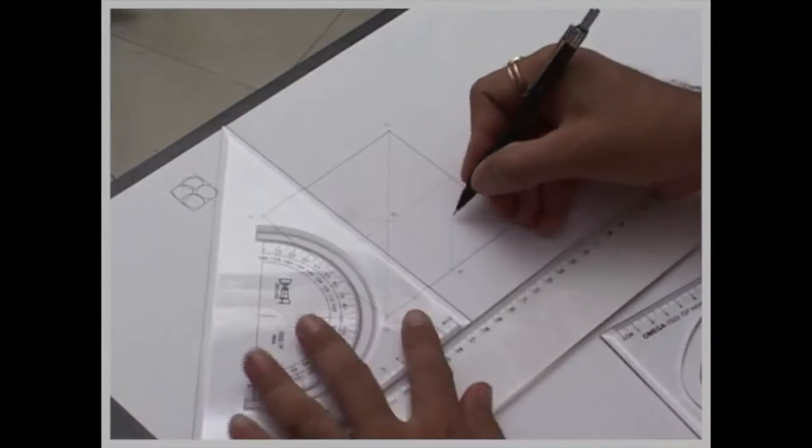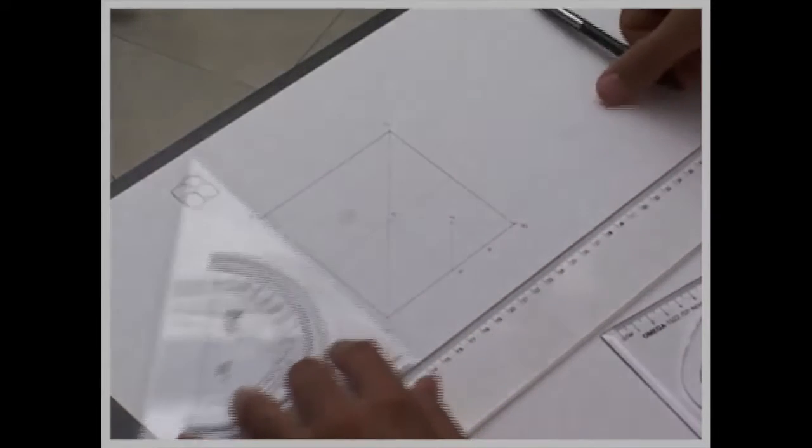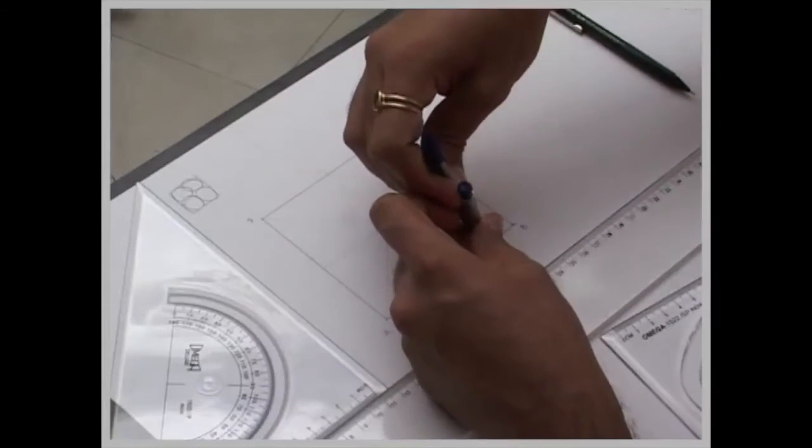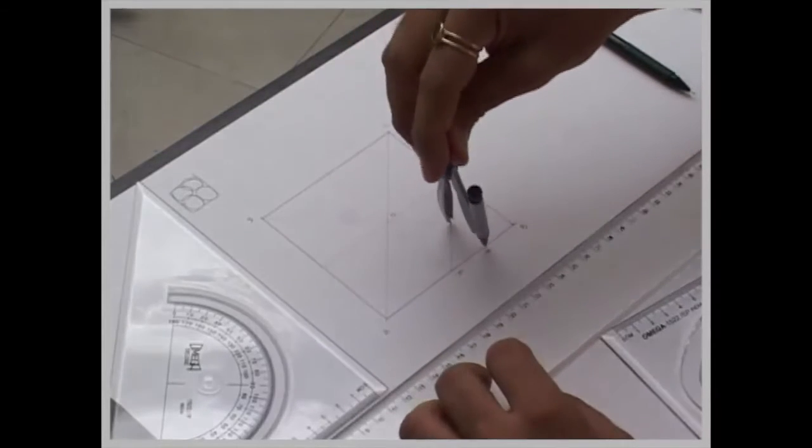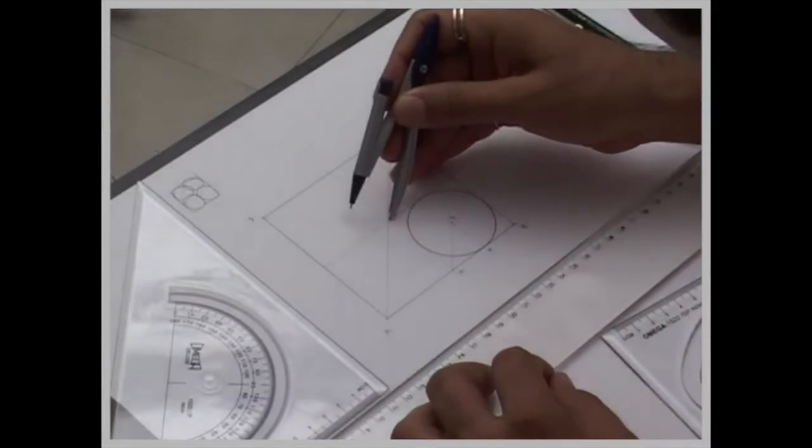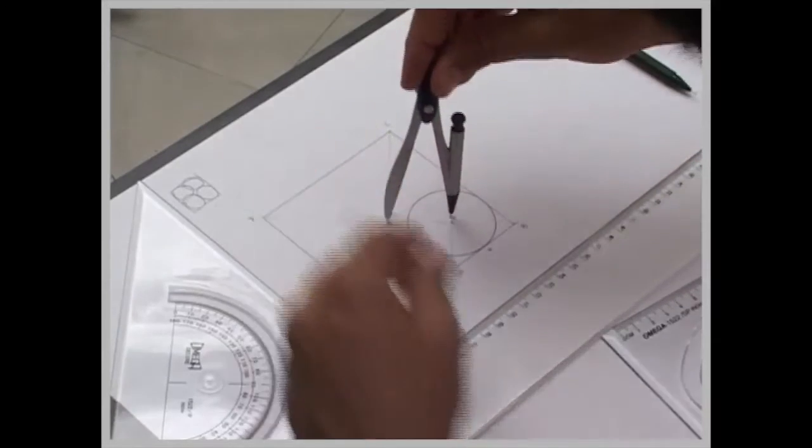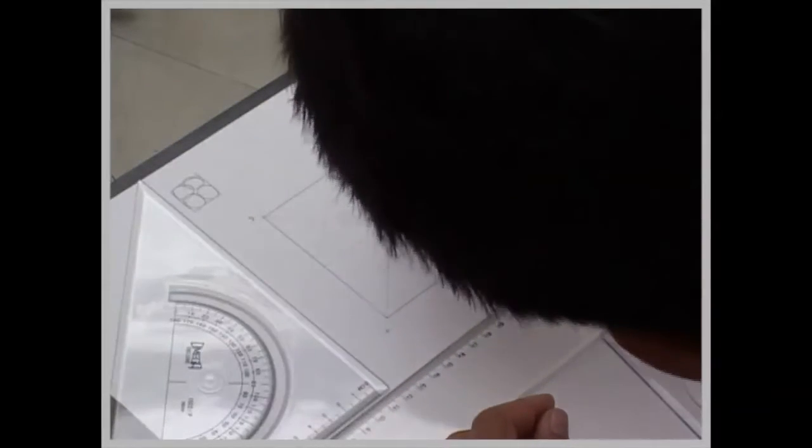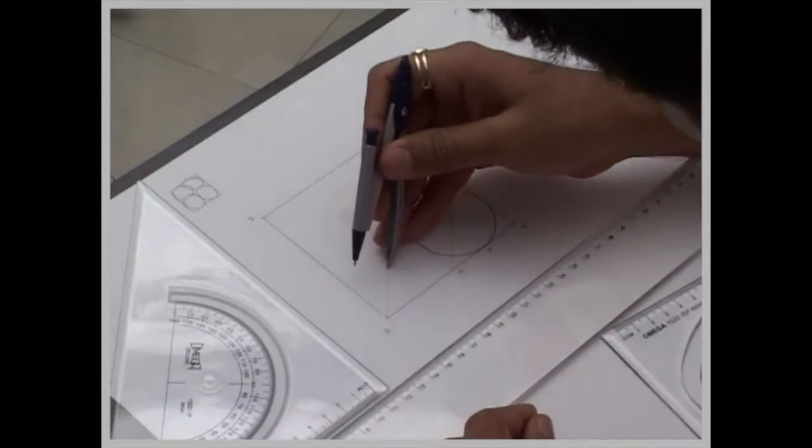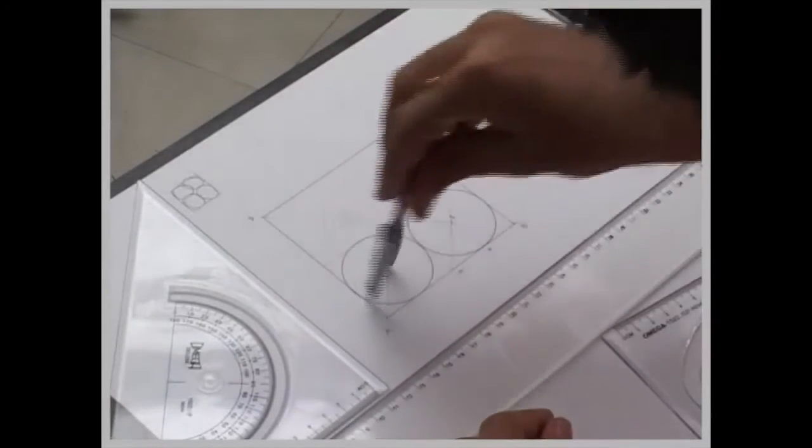wherever it will intersect, that is point 1, this is point N, you take 1 to N, draw a circle, you take 4 to 1, now again you take the same radius, from here you can draw another circle,